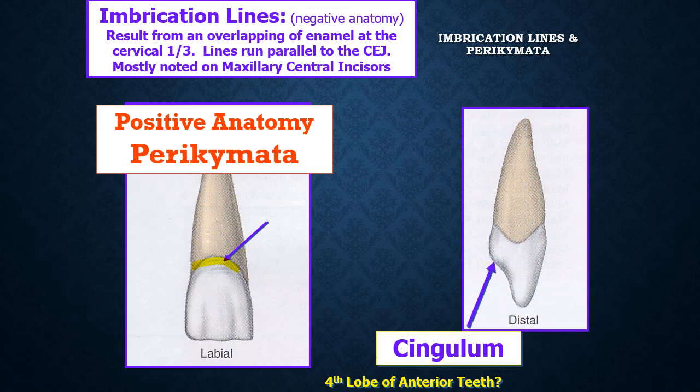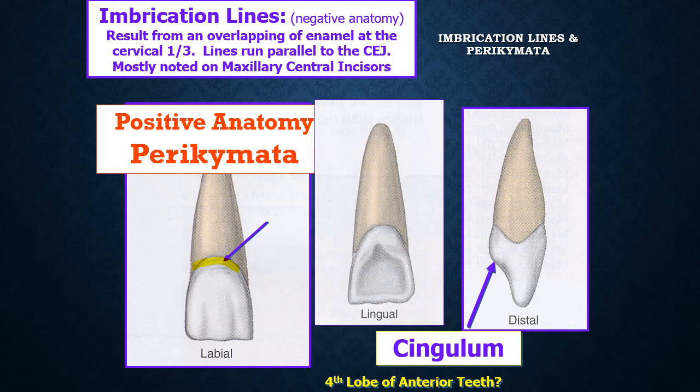In anterior teeth — both incisors and canines — there is a fourth lobe, represented by the cingulum of the tooth. The cingulum is the representation or manifestation of the fourth lobe of anterior teeth, and it is most markedly present in the canine, which has the largest cingulum of all the anterior teeth. On the central incisor, the cingulum here represents the fourth lobe of the anterior tooth.